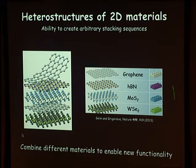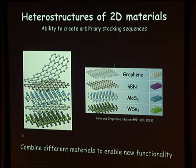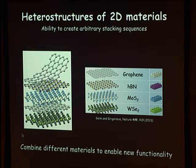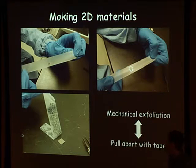What I want to tell you about today is mostly what happens when you start combining these materials together — stacking graphene on other materials. We now have the ability to take any of these materials and put them on any of the others, a bit like Legos. You can put graphene on a boron nitride substrate or on molybdenum disulfide — graphene on an insulator, graphene on a semiconductor — and ask what happens to the electronic properties.